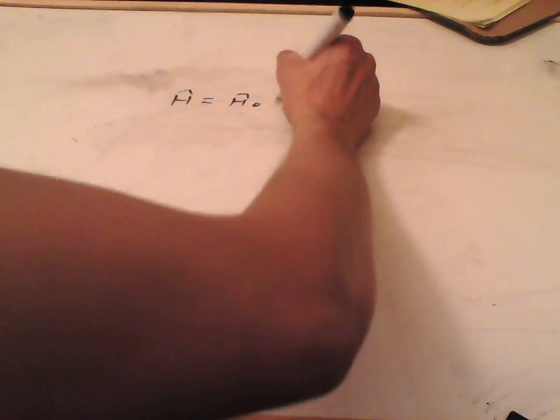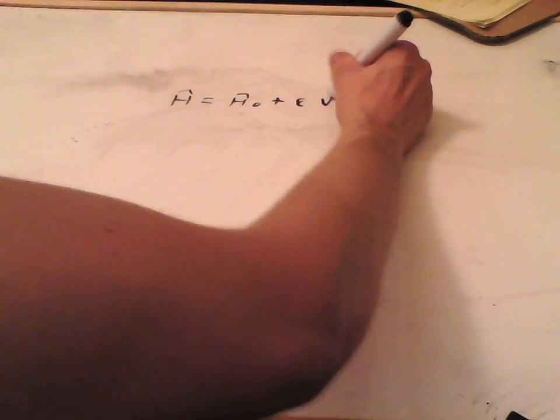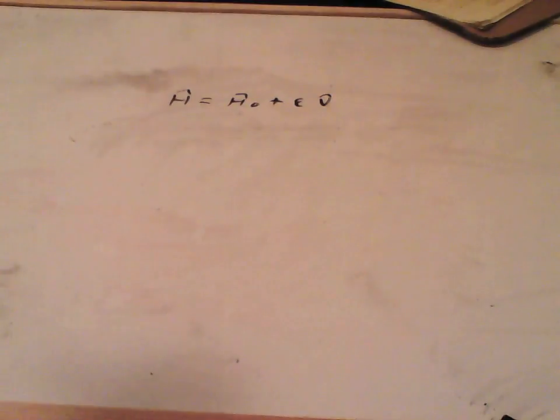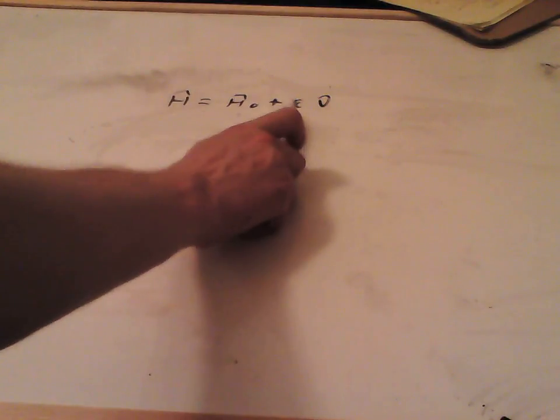And another part, which I'm going to call epsilon V, which we can't really solve for. So, we can't solve this whole Hamiltonian here. But we're going to say that epsilon here is small. And that means we can use small approximations, or like Taylor series kind of expansions, in terms of epsilon.